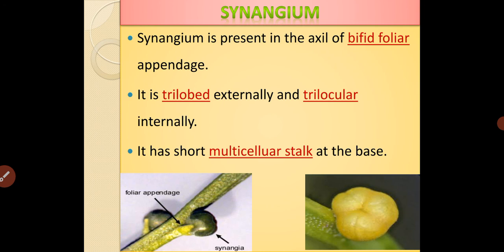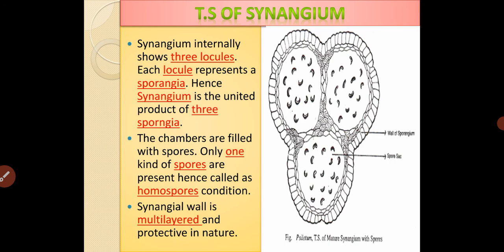If you take the TS of synangium, it internally shows three locules. Each locule represents a sporangia, hence synangium is the united product of three sporangia. The chambers are filled with the spores. Only one kind of spores are produced in Silotum, hence it exhibits the homosporous condition. The synangium wall is externally covered by a multi-layered nature and it is protective in condition.